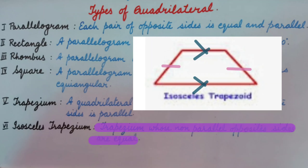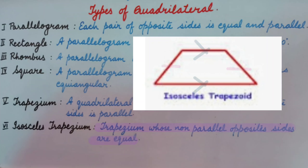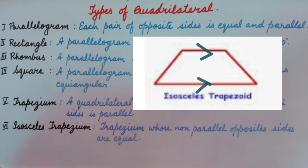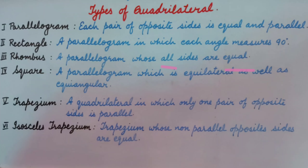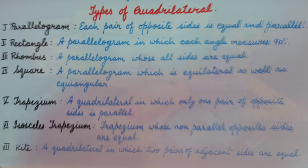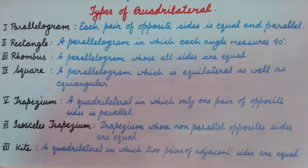Isosceles trapezium. A trapezium whose non-parallel opposite sides are equal is called an isosceles trapezium. This means one pair of opposite sides is parallel and the other pair, which is non-parallel, is equal.